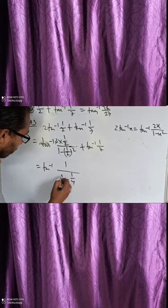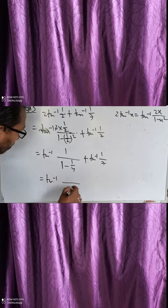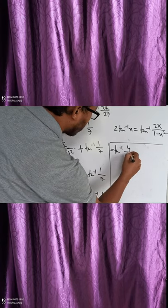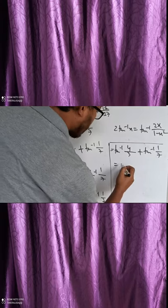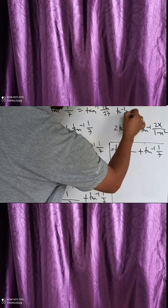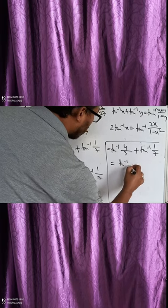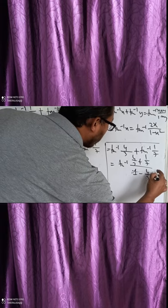So we have tan⁻¹(1 divided by (1 minus 1/4)) plus tan⁻¹(1/7). Subtracting gives 3/4 in the denominator, so we get tan⁻¹(4/3) plus tan⁻¹(1/7). Now again we apply the property tan⁻¹(x) plus tan⁻¹(y) equals tan⁻¹((x plus y) over (1 minus xy)), where x is 4/3 and y is 1/7.